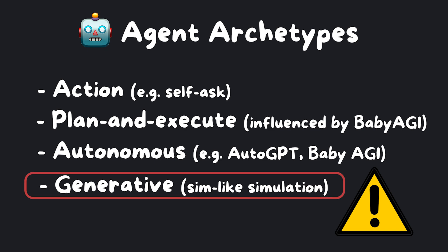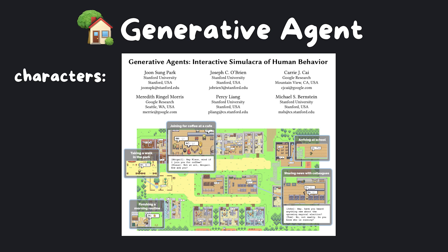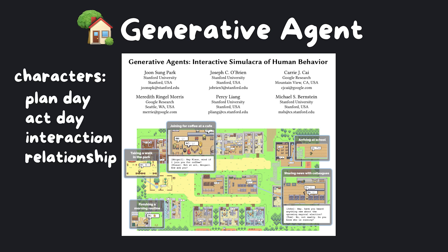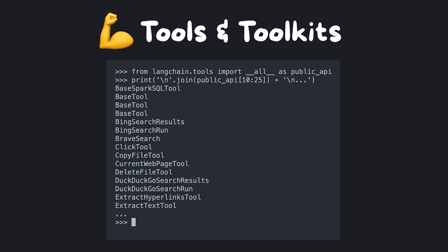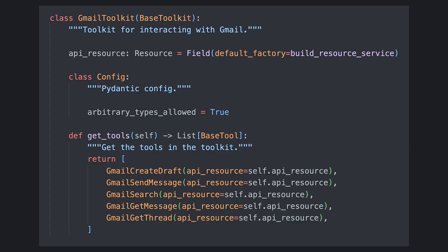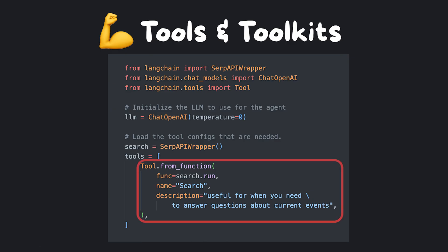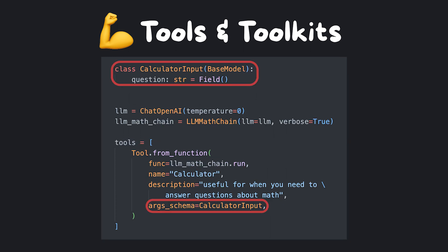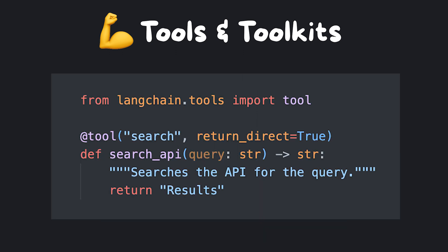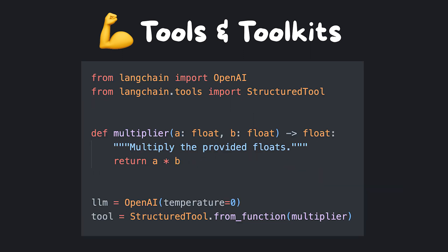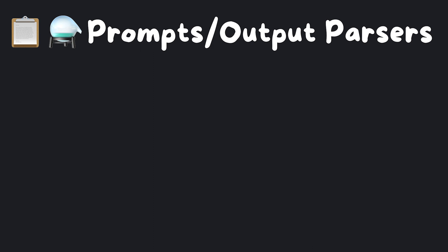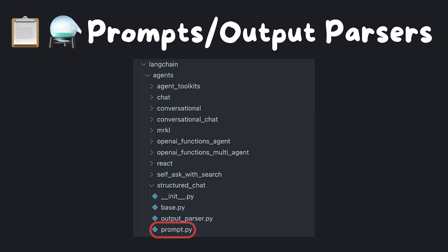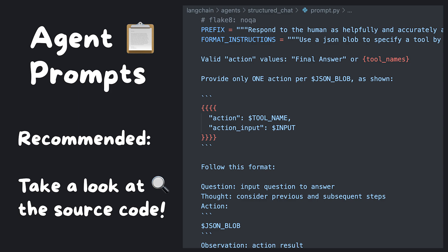Another interesting framework is the Generative Agent. From the Generative Agent paper, the team created a Sims-like universe where characters planned and went about their days, interacted with each other, formed relationships, and even celebrated birthdays together. Moving on to tools: you can find available tools and toolkits by running a specific command. Toolkits are simply related tools packed together in an array — for example, the Gmail toolkit contains tools related to using Gmail. You can create a tool using the tool-from-function factory method, which needs a function accepting a string input and returning a string output, a name, and a description. Using Pydantic, there are also ways to provide more information about inputs, a decorator for defining tools, and a structured tool class for multi-argument tools. For a good understanding of prompts and output parsers, check out my previous video LangChain 101: The Complete Beginner's Guide, and look at the source code in the LangChain repo to build deeper intuition on how the magic happens.